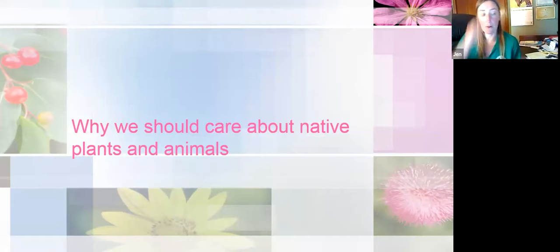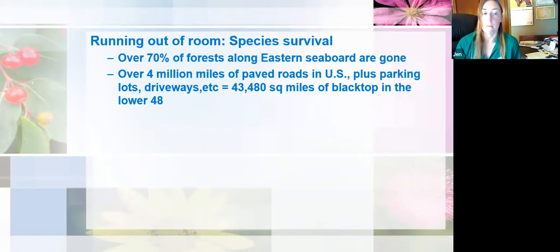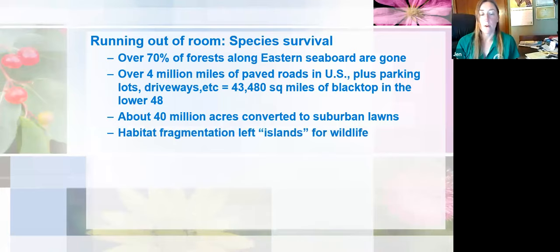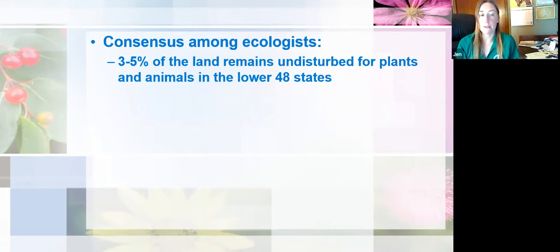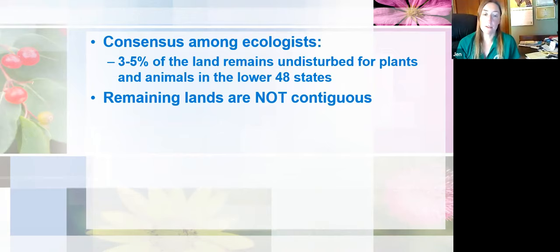So why should we care about our native plants and animals? Our native species are really running out of room. Over 70% of our forests in the east are gone, an enormous amount of area is paved, and about 40 million acres are converted to suburban lawns in this country. What we're left with are little fragmented islands for wildlife to live, and that's most of the time not sufficient for their survival needs. There's a consensus among ecologists that only three to five percent of lands remain that are not contiguous for our native plants and animals here in the lower 48.